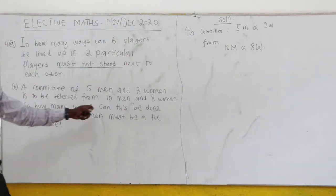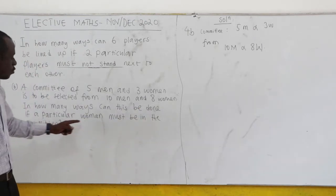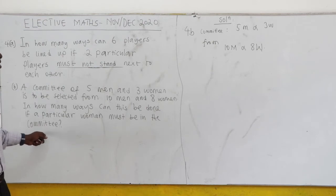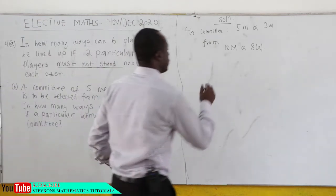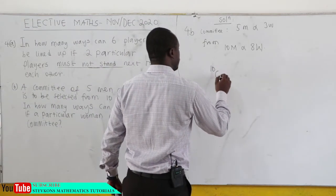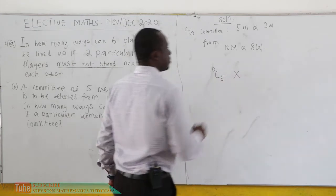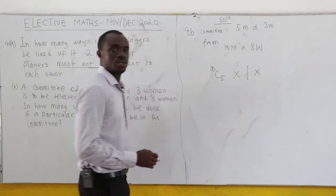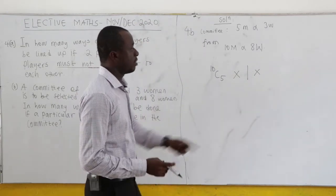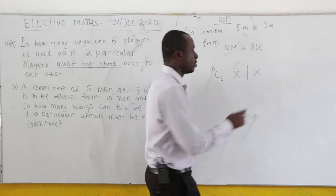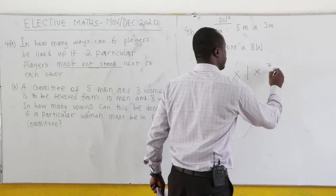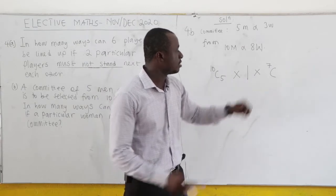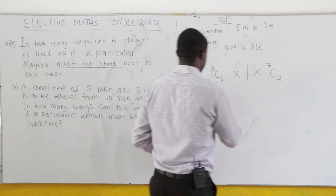It says that in how many ways can this be done if a particular woman must be in the committee? So a particular woman must be in the committee. Now, for the men, we are going to get 10 combination 5 times. Now a particular woman. So that is 1. This woman is chosen. Now how many women do you have? 8. And then you've taken 1 already. That would be 7 remaining. Now you're supposed to choose 3. We've taken 1 already. So 2 is left for us to choose.